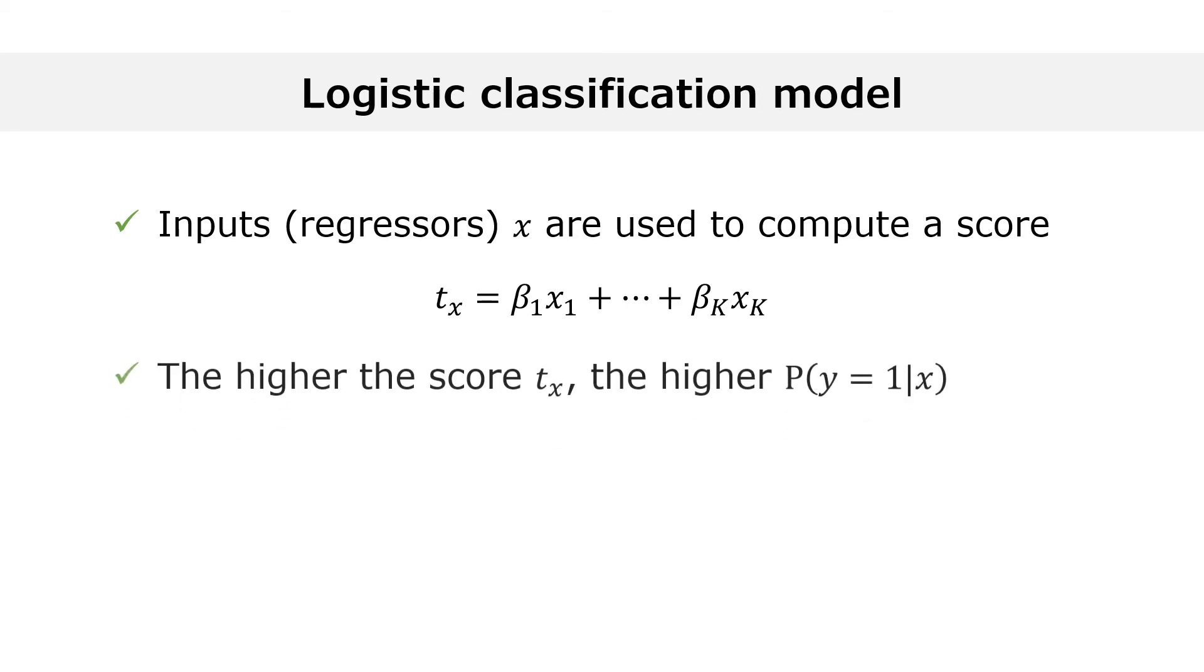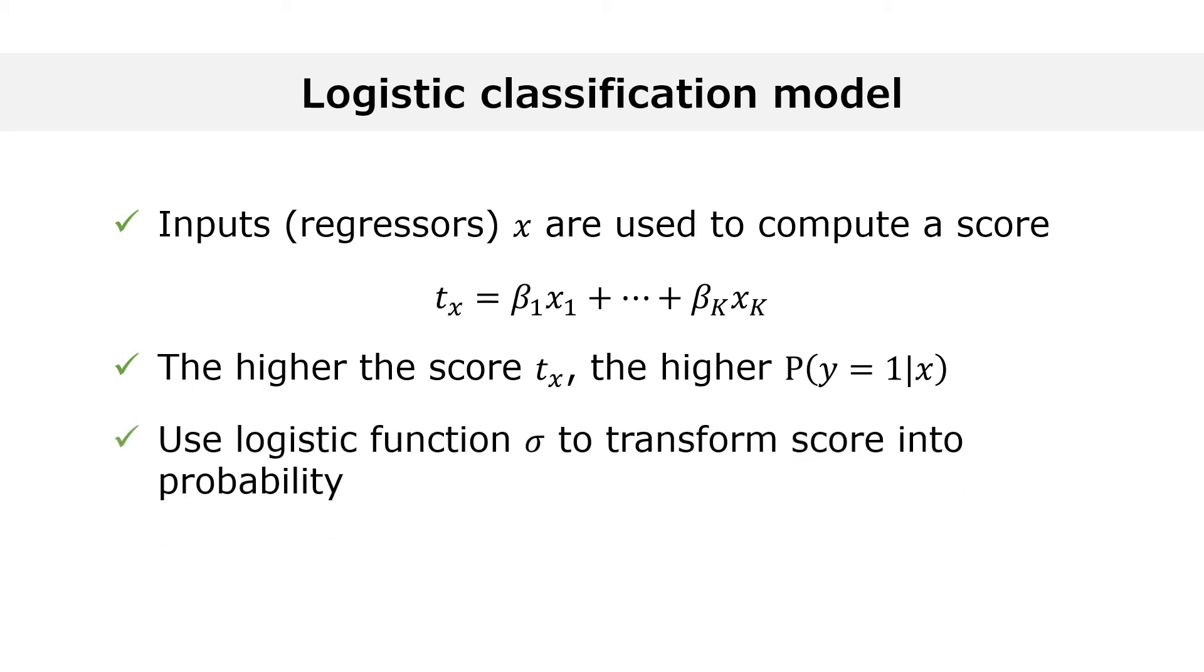The higher the score, the higher the probability that y equals one. However, since the score can take any real value, we transform it using a function sigma, called the logistic function, that takes values in the interval between zero and one.